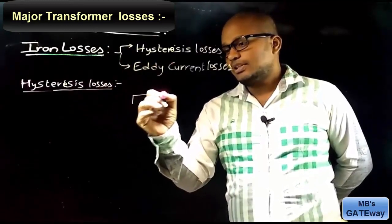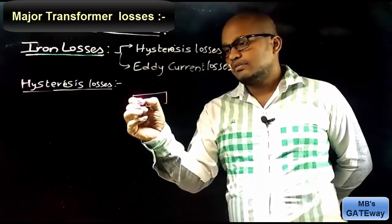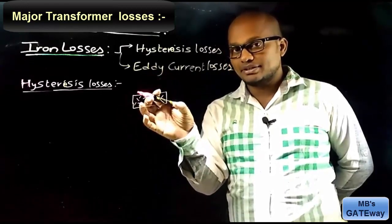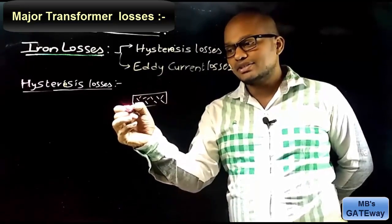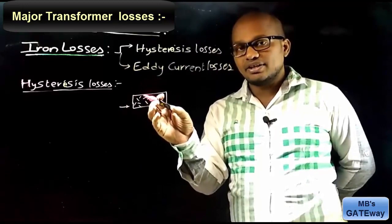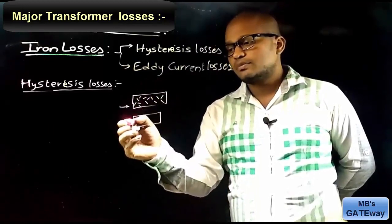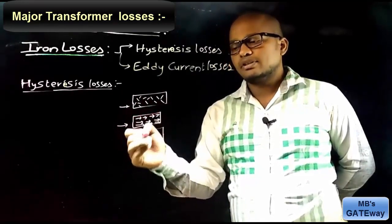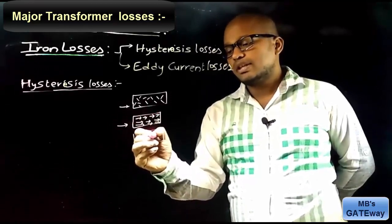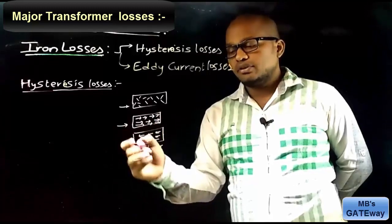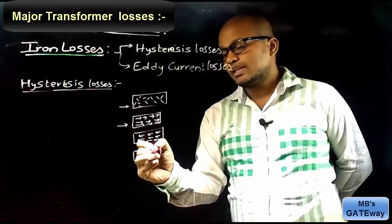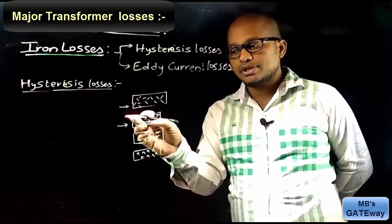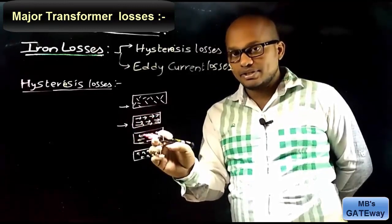In magnetic material, under normal conditions there are a number of domains which are randomly placed in the magnetic material. When this magnetic material is excited from an external source, these domains will be aligned in a different direction depending on the excitation. For different excitations, the domains align in different particular directions.